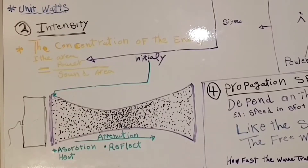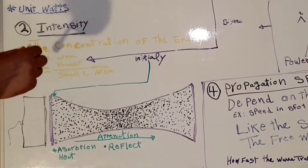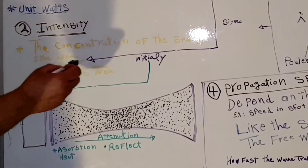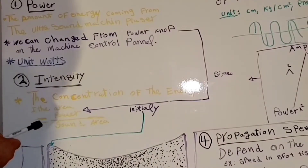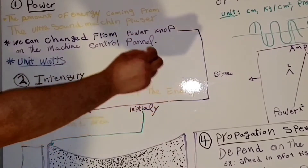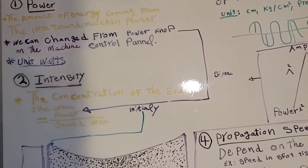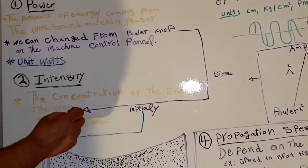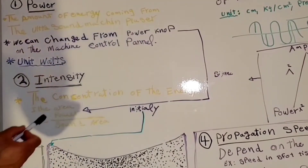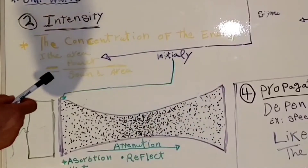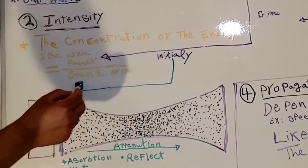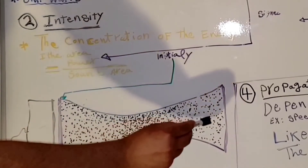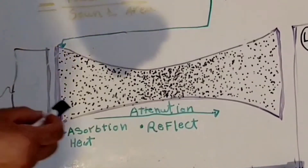Intensity is the concentration of the energy in an area, and because it is a concentration of energy over area, it is equal to power divided by the area. Because intensity equals power divided by area, we can also control it with the same knob. So when we control the power on the machine, we are also controlling the intensity. This amount of intensity that we control from the machine is the initial intensity.